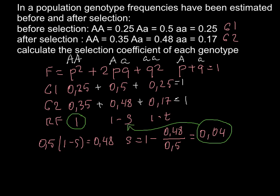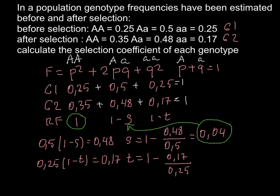For the homozygous recessive, 0.25 multiplied by (1 minus T) should give us 0.17 in generation 2. So T equals 1 minus (0.17 divided by 0.25), and the answer is 0.32. This is the selection coefficient for the homozygous recessive.